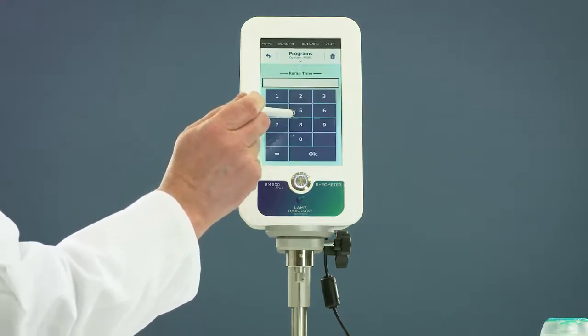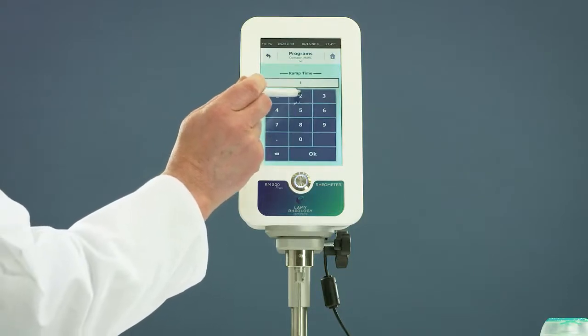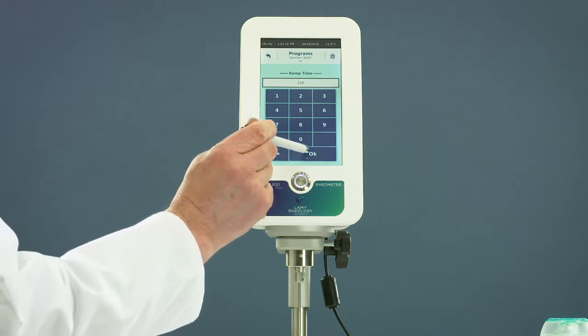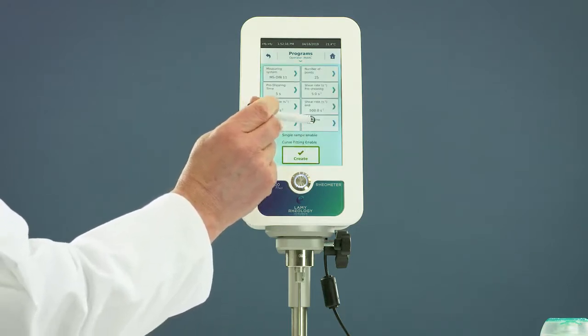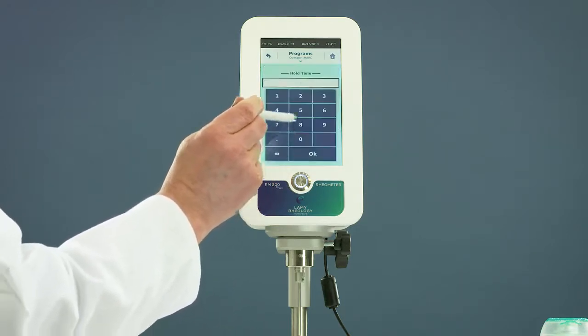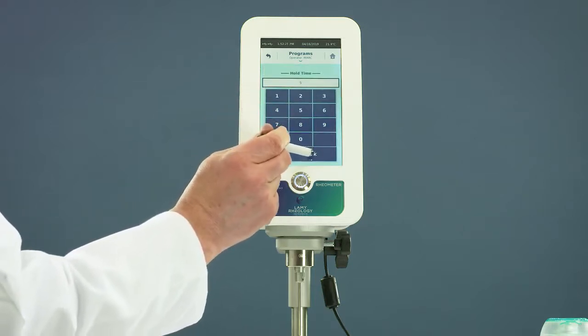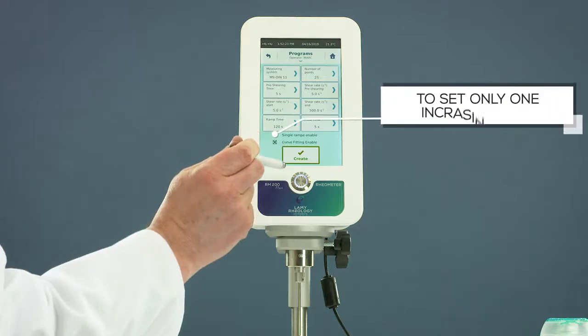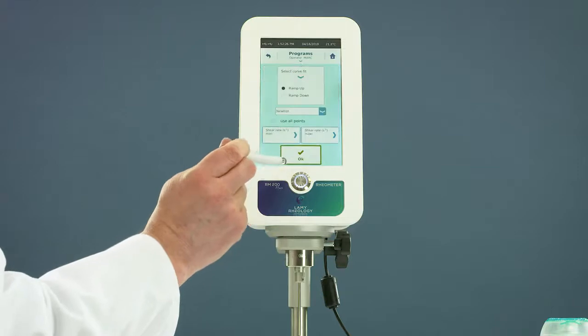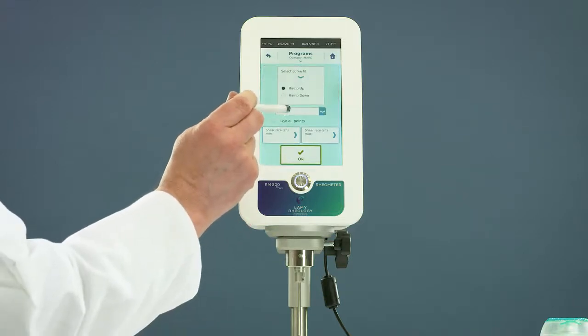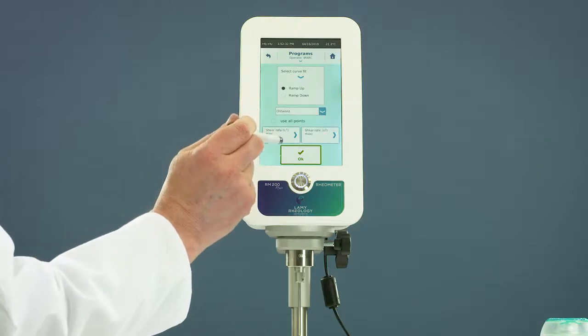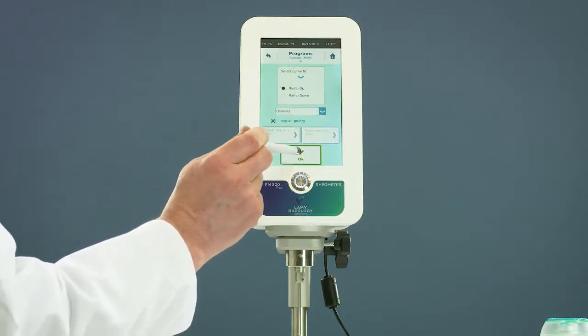Set the duration for the increasing ramp. You can hold the last shear rate value by setting the hold time. Select the fitting curve to set an analysis of the result. Choose a part of the curve and a regression model. You can analyze all data points or define limits.